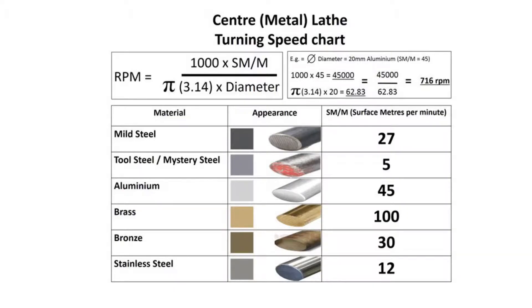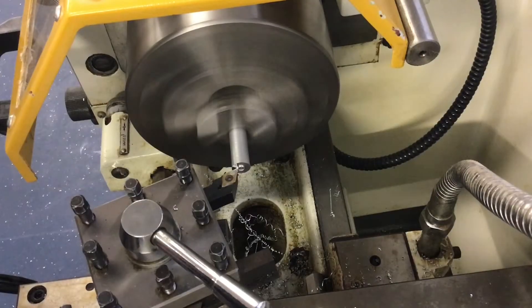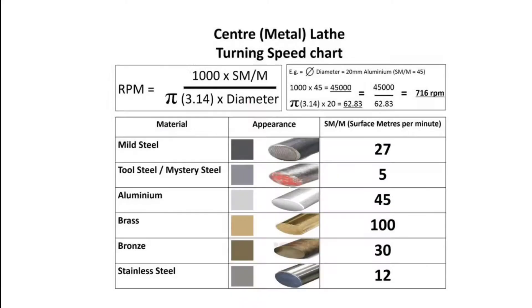This video will explain how to calculate how fast the three-jaw chuck on a centre lathe should be turning depending on the material being machined. The speed the three-jaw chuck turns at is determined by the type of material being turned and its diameter.